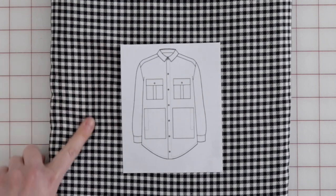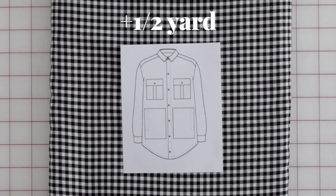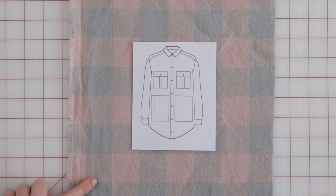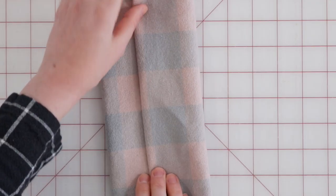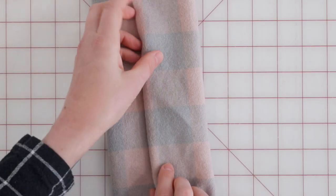Generally for small scale patterns you'll want to purchase an extra half yard, and for large scale patterns a full yard should cover you. Plus if you buy a little extra you can make little experiments to see how certain areas like a shirt placket will come together.